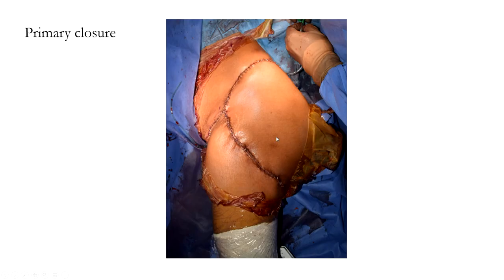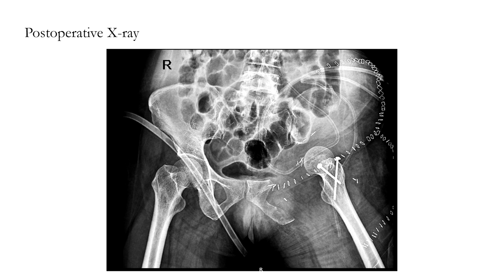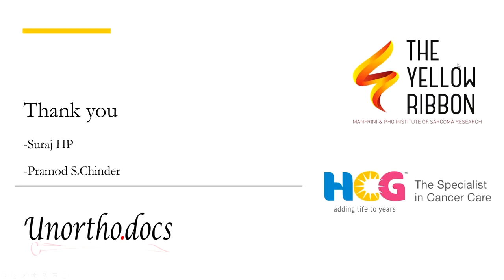Primary closure was achieved over a suction drain. This was the post-operative radiograph. The patient was placed in a hip spica for 6 weeks and toe-touch ambulation was initiated on post-operative day 3. Currently, the patient is ambulating with walker support without any signs of wound dehiscence or local recurrence. Thank you for your patient listening.